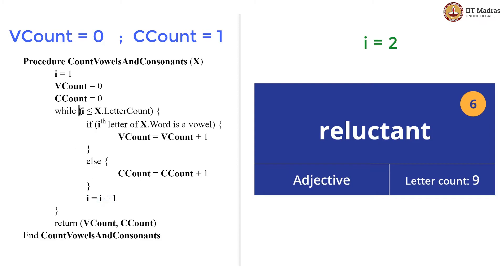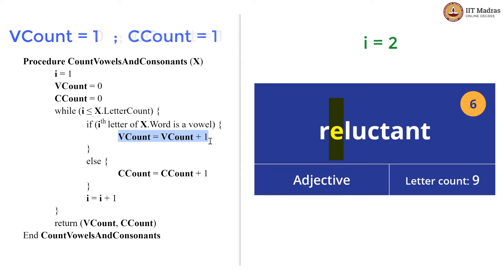We go back to the while condition — 2 is less than 9, so we go inside again. We check if the ith letter of x dot word is a vowel. The second letter is 'e' and it is a vowel, so we increment v_count, giving us one vowel and one consonant so far. Since we entered the if block, we do not go into the else block, and we increment i to 3.